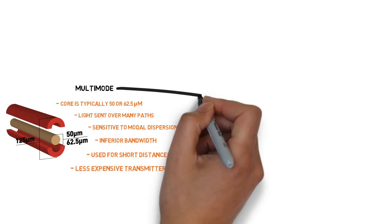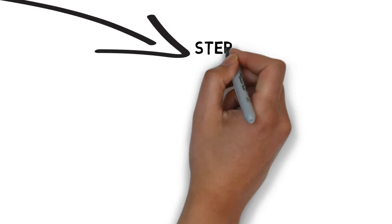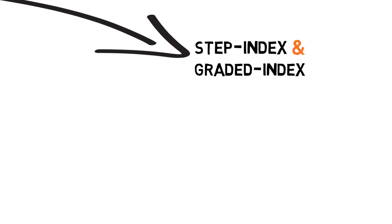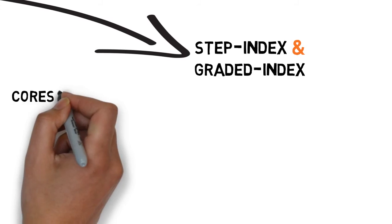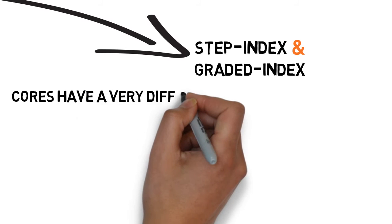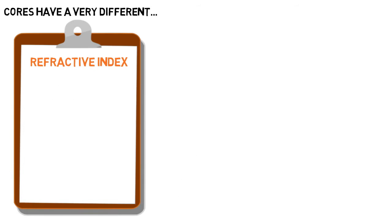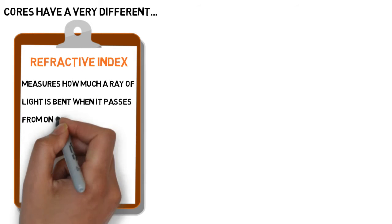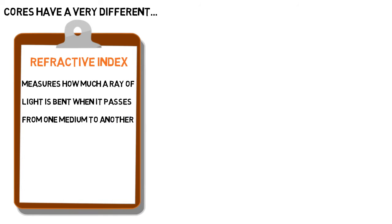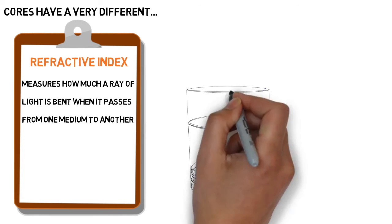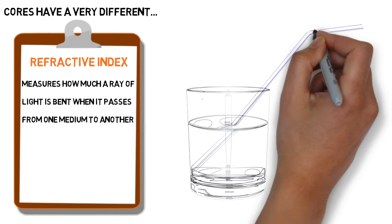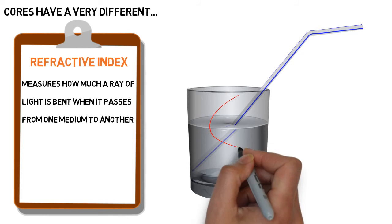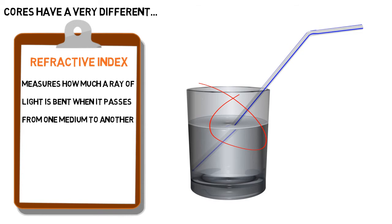Multi-mode fibers can further be separated into step index and graded index fibers. The main differentiator between the two is that their cores have a very different refractive index. The refractive index measures how much a ray of light is bent as it passes from one transmission medium to another. This effect is responsible for the optical illusion of a straw being bent in a glass of water.